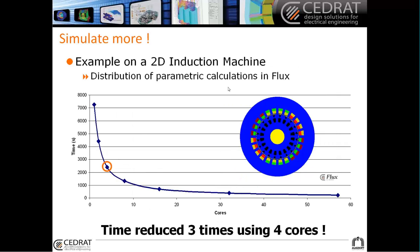Also on this 2D induction machine, you can see the acceleration thanks to the distribution of computation. For a big parametric analysis, you can reduce the time of computation by 3 using only 4 cores, which means you only have to work on your machine without using a very big machine. And of course, if you use a big machine, you would have a very big reduction of computation time. We hope that this new feature will help you go faster into all of your parametric studies, and you can try it for free when you update your license.